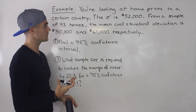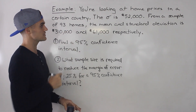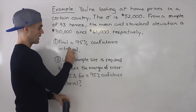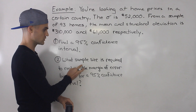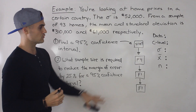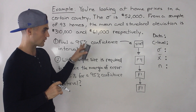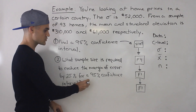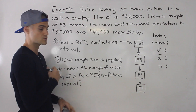Let's do an example. You're looking at home prices in a certain country. The population standard deviation for home prices is $52,000. From a sample of 93 homes, the mean is $310,000 and the sample standard deviation is $61,000. There are two questions: number one, find a 95% confidence interval; number two, what sample size is required to reduce the margin of error by 25% for a 95% confidence interval? Number two is really what I want to focus on as that's the new topic.